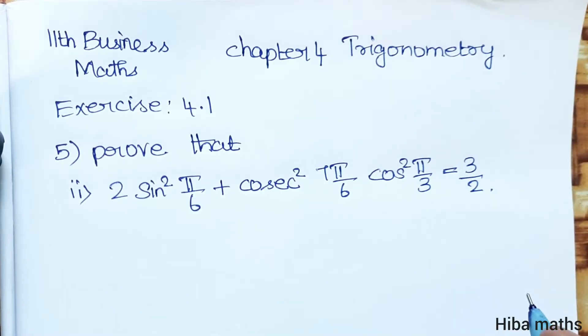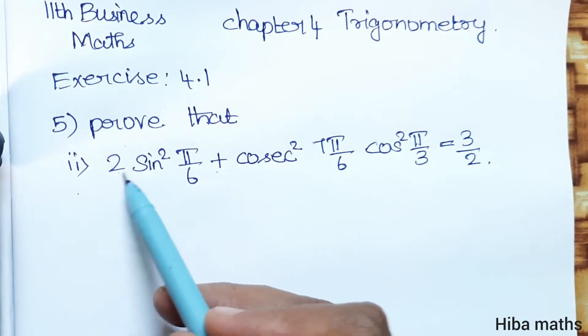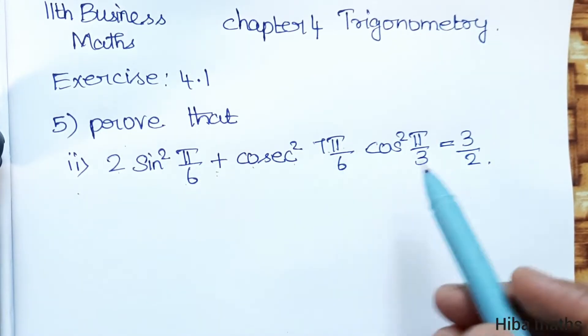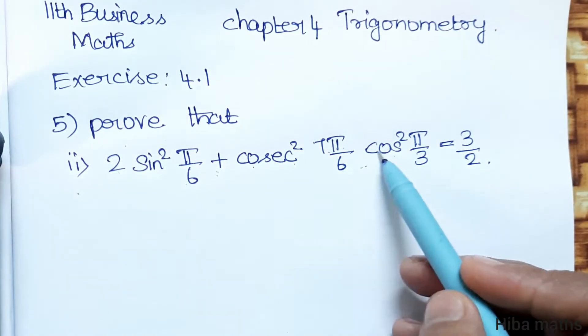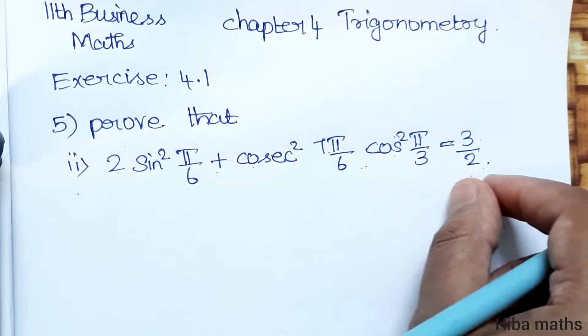Hello students, welcome to Hiba Maths. 11th standard Business Maths, Chapter 4 Trigonometry, Exercise 4.1. The question is to prove that 2 sin²(π/6) + cosec²(7π/6) × cos²(π/3) = 3/2.